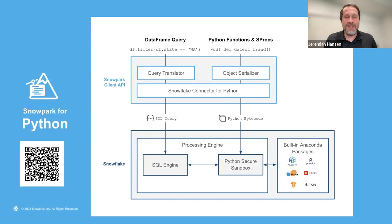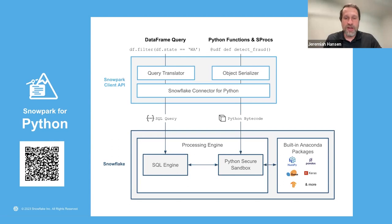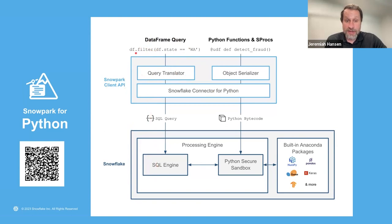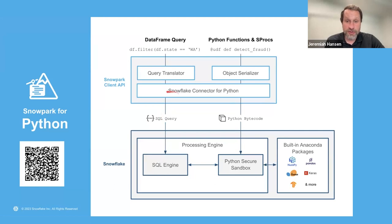I don't know if you've ever seen the movie Inception — it's like the levels of a dream. Starting with a DataFrame query or expression: in Python, you might have a simple DataFrame filter. The Snowpark client API translates that DataFrame expression into a SQL query, and that SQL query gets issued to Snowflake using our Python connector and run in Snowflake's SQL engine. All of those DataFrame expressions translated to SQL run inside of Snowflake.